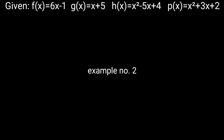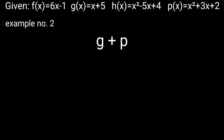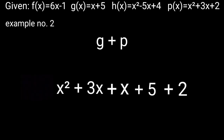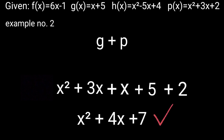Example 2: g + p — substitute g with x + 5 and p with x² + 3x + 2. The equation becomes x + 5 + x² + 3x + 2. Combine like terms: x² + 3x + x + 5 + 2, then solve. The final answer is x² + 4x + 7.